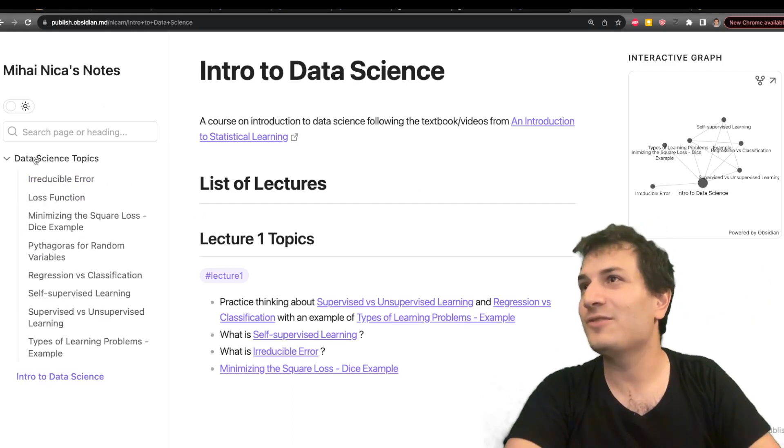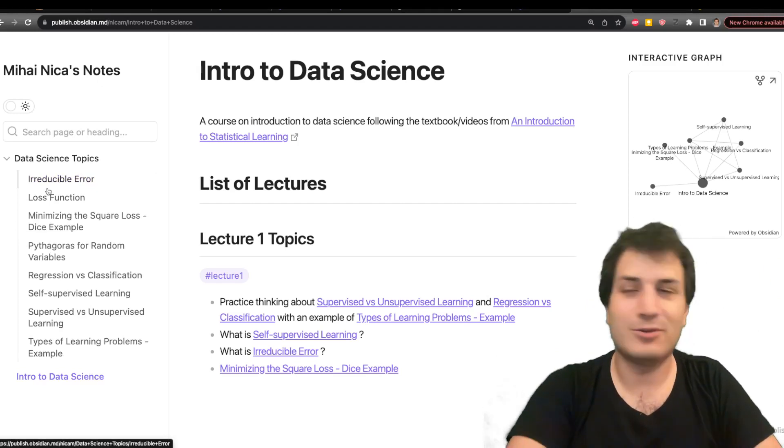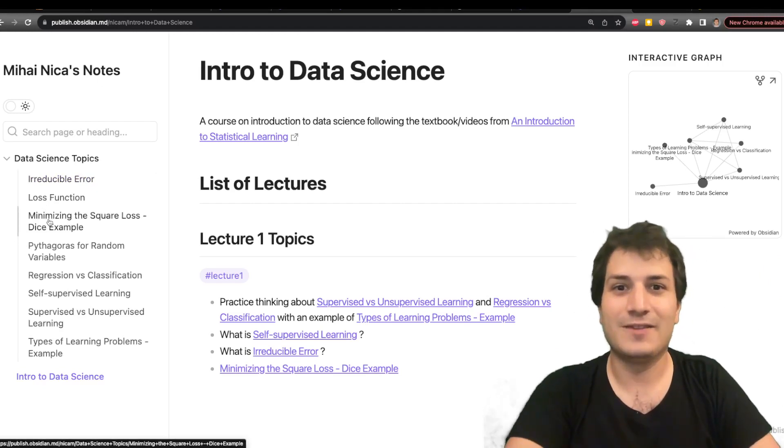So you can see all the notes if you click on over here. These are all the different notes. What is irreducible error? What is a loss function? Things like that.